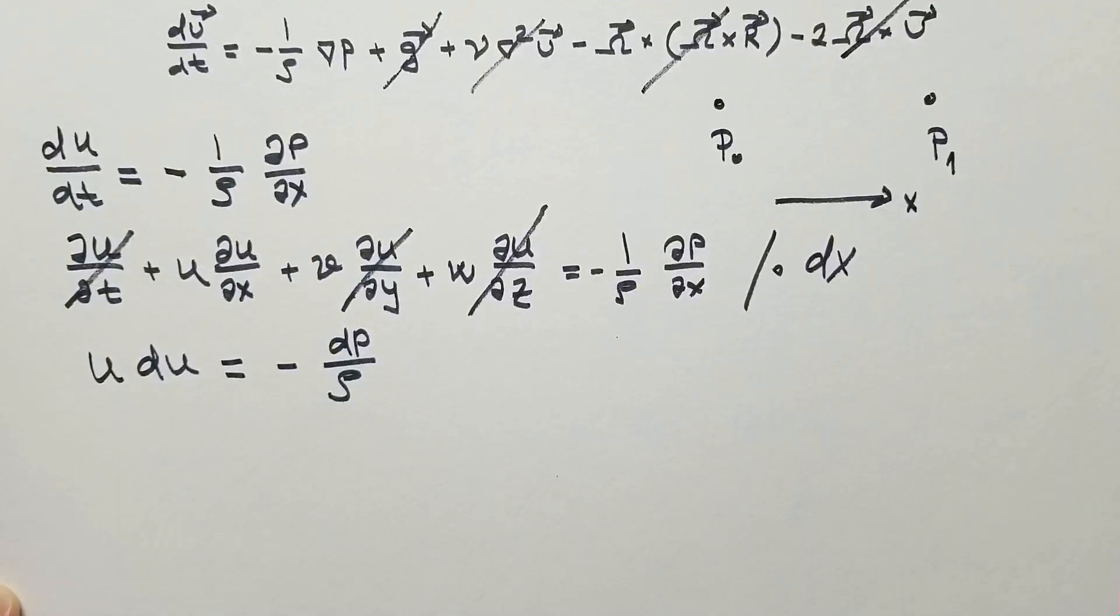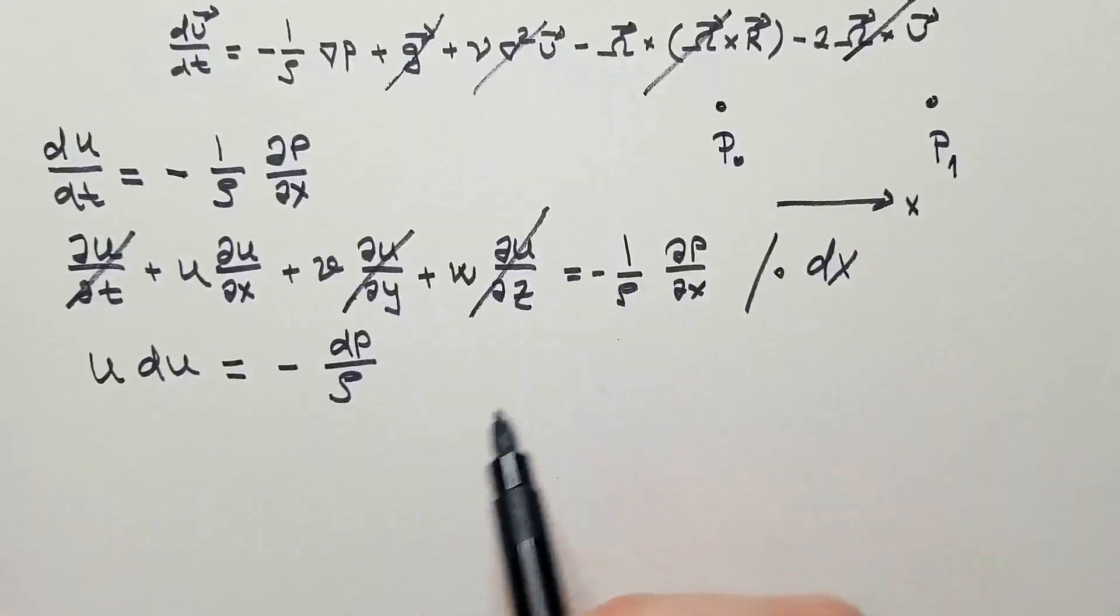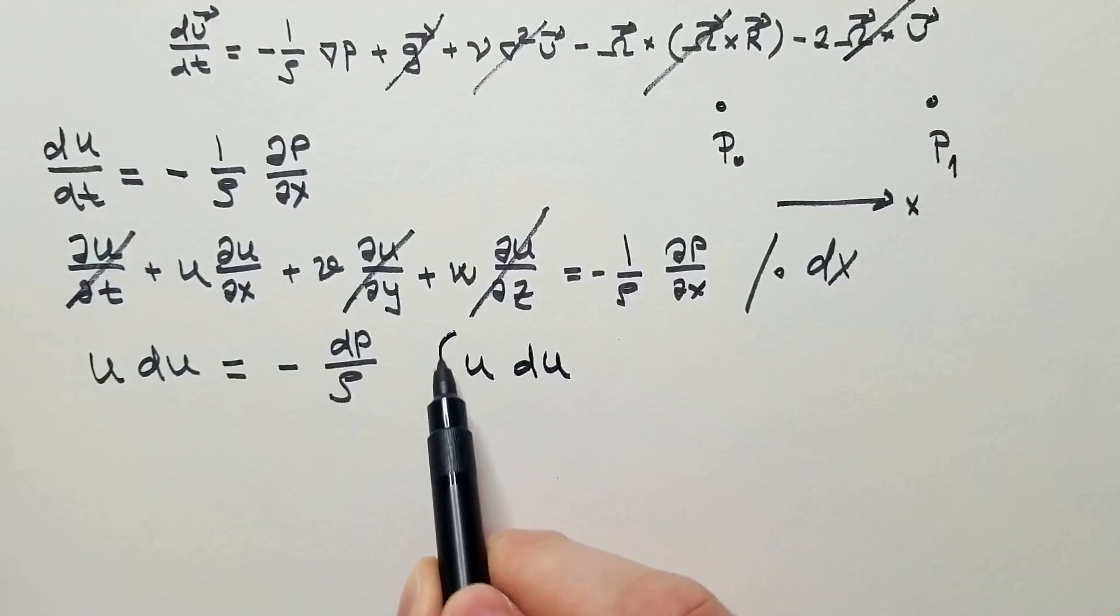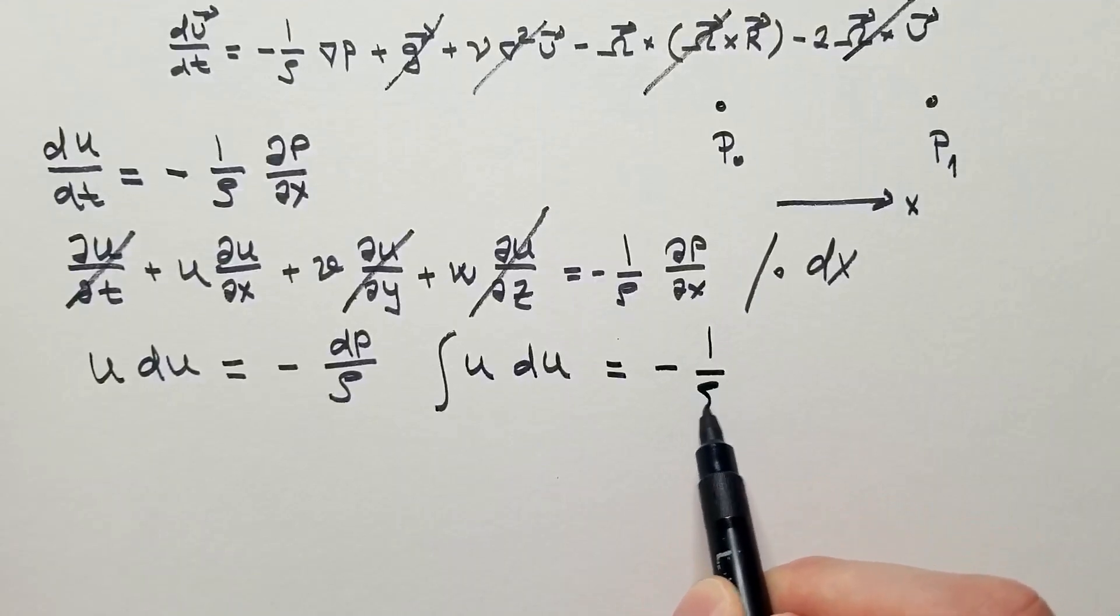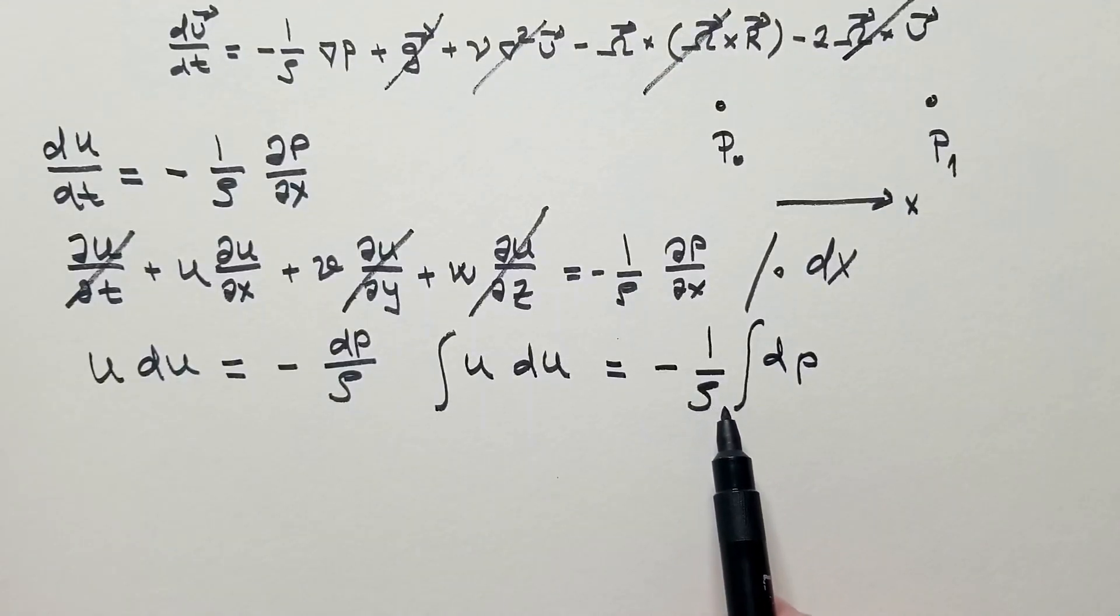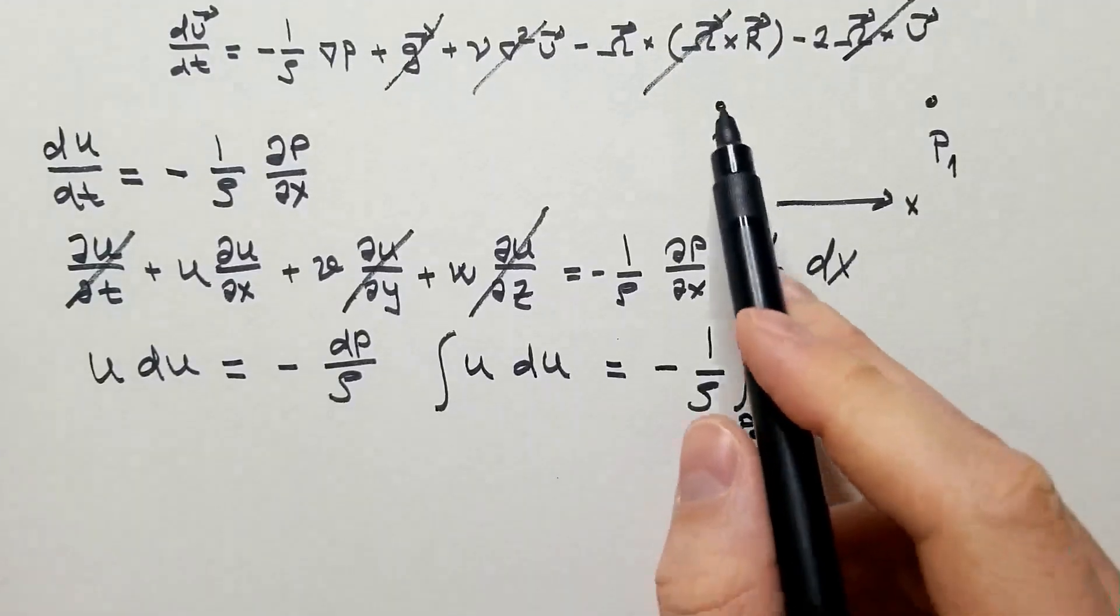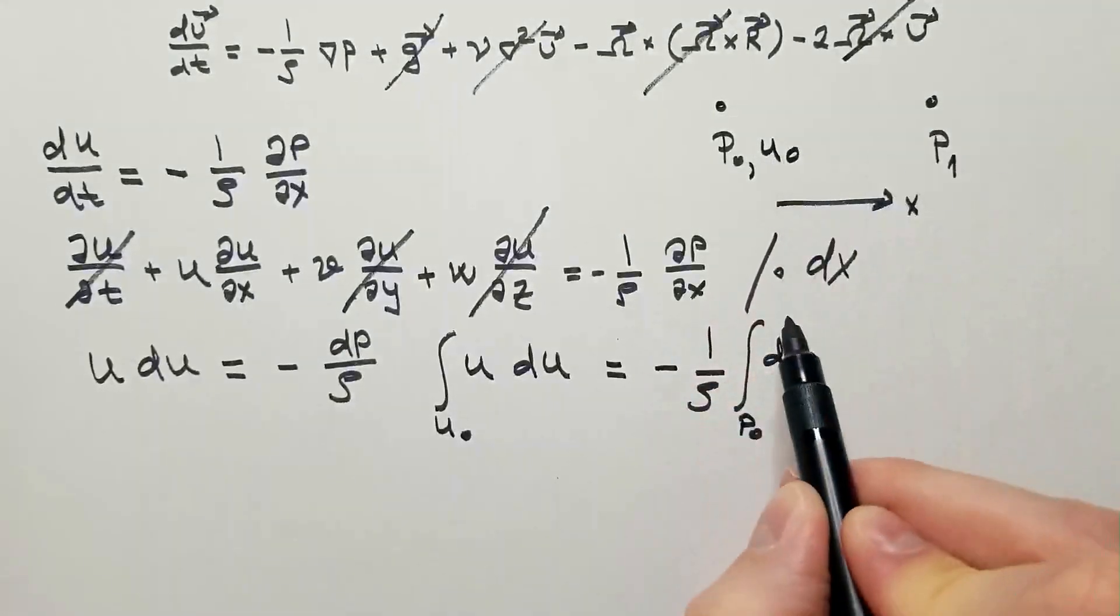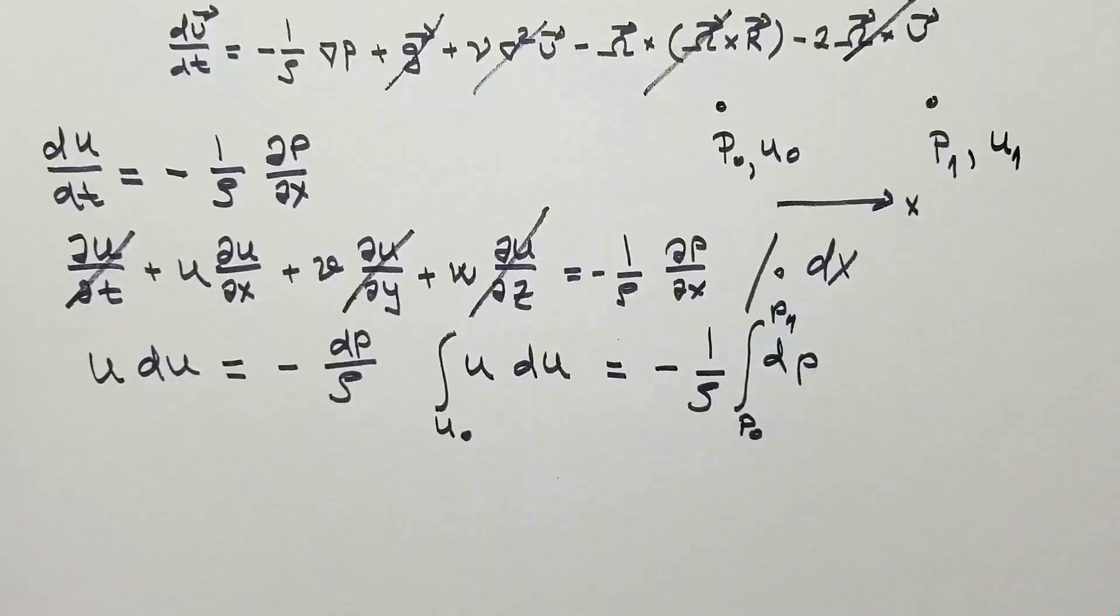Now, I need to integrate this between these two points. So I will write that, let's say here, u du integral is equal minus 1 over rho dp. I integrate because I assume that density is constant. Here, I integrate between p0, where velocity is some u0, to p1, where velocity is some u1 that I am trying to find.